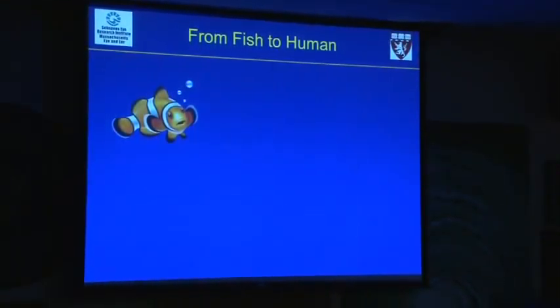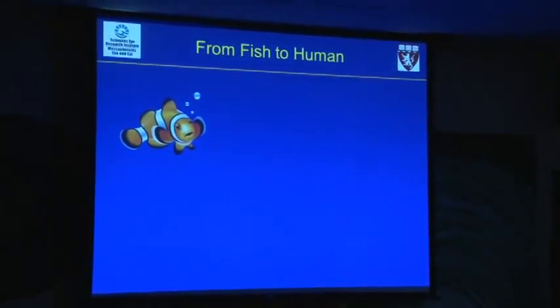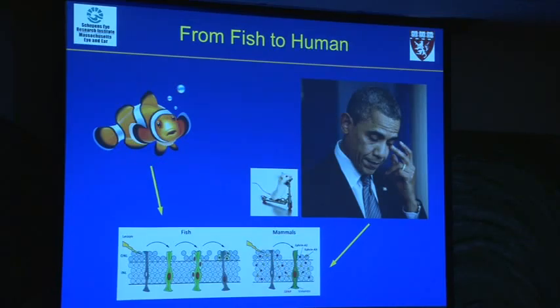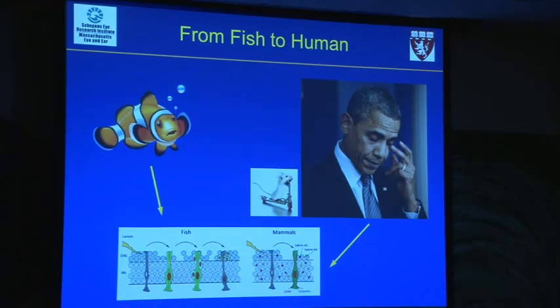Fish can always regenerate the retina no matter what happens — you can wipe out the retina and they'll just grow a new one. However, if you compare the cell types in the fish retina and the human retina, we're actually very similar. We have cones, rods, photoreceptor cells, ganglion cells, and Müller cells. Müller cells are believed to be one of the major retinal progenitor cells. When the fish retina is damaged, Müller cells pull back into the cell cycle and generate all kinds of retinal cells. There are plenty of Müller cells sitting in our retina — so why don't we do it?